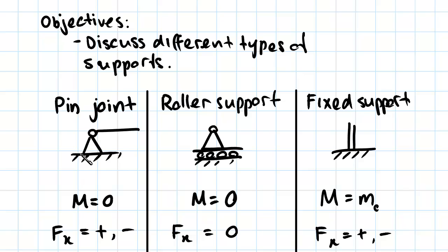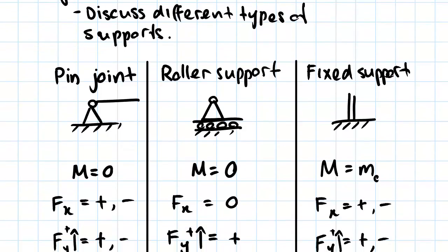This joint can also support forces in the x direction, being positive and negative. If you pull it that way, it will push back this way, and if you push it this way, it will push back that way.